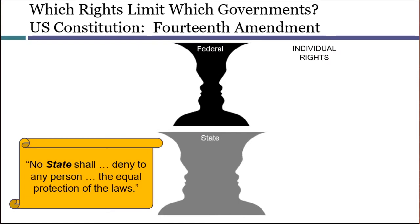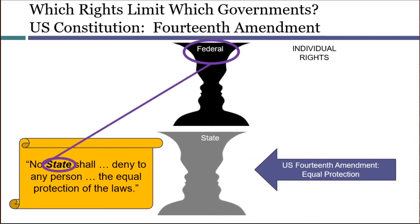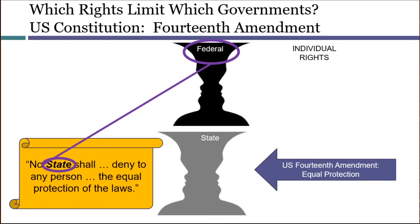The state constitution might have its own protections for freedom of speech that might limit a state government. But if there are no such state laws, and if the First Amendment does not limit the state, then free speech within that state is not legally guaranteed. A similar question exists in the reverse direction. The Fourteenth Amendment, enacted just after the Civil War, says that states may not deprive equal protection of the laws. This plainly limits state government, but the federal government is not a state. So does that mean the federal government is allowed to deny equal protection? These are the text-based puzzles that the incorporation doctrine was created to answer.